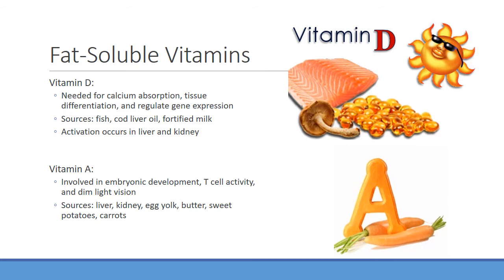Vitamin A, or retinol, is very useful for embryonic development — which is why we don't like to give drugs that inhibit it. Isotretinoin (Accutane) is an antagonist of vitamin A and leads to severe birth defects, so we prevent pregnant women or those who may become pregnant from using it. Vitamin A is also important for T cell activation and is critical for dim light vision. Chronic deficiency leads to night blindness, because retinol is utilized to produce rhodopsin, which is essential for detecting light within the retina.